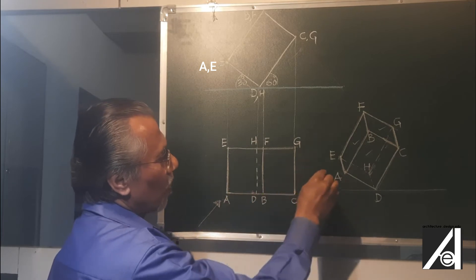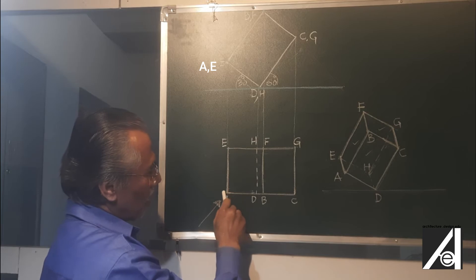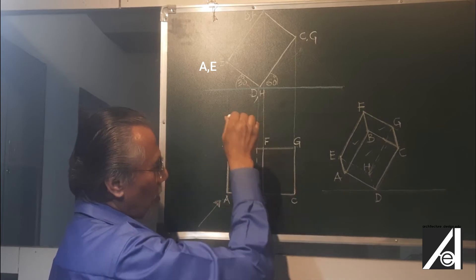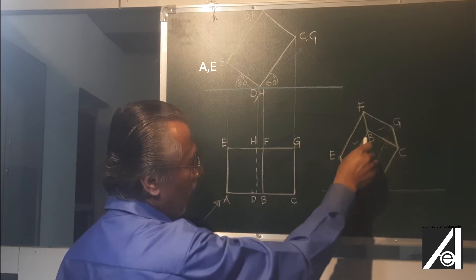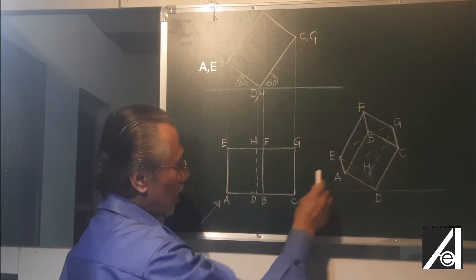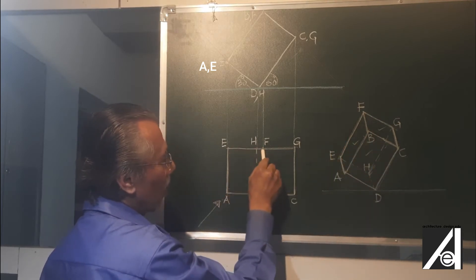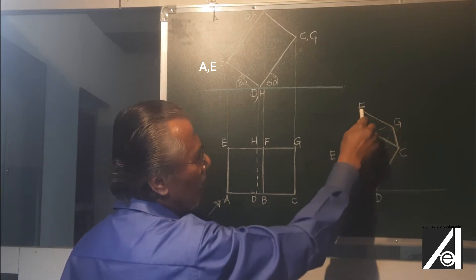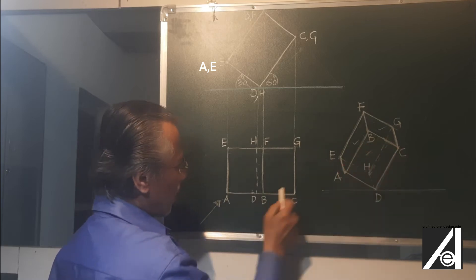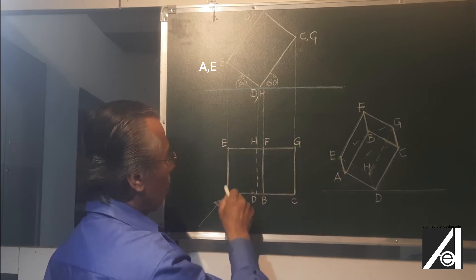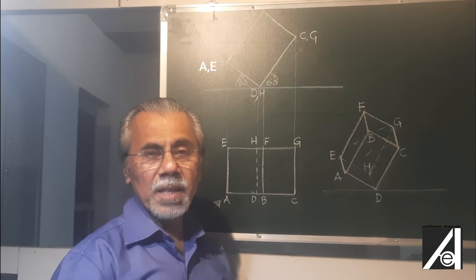With this direction of light, let us see which surfaces receive the light. This surface receives the light, this surface receives the light, and the top surface also receives the light. So this surface BFGC receives the light. ABCD — this surface also receives the light. And EFBA — this surface also receives the light. So all these three surfaces receive the light.